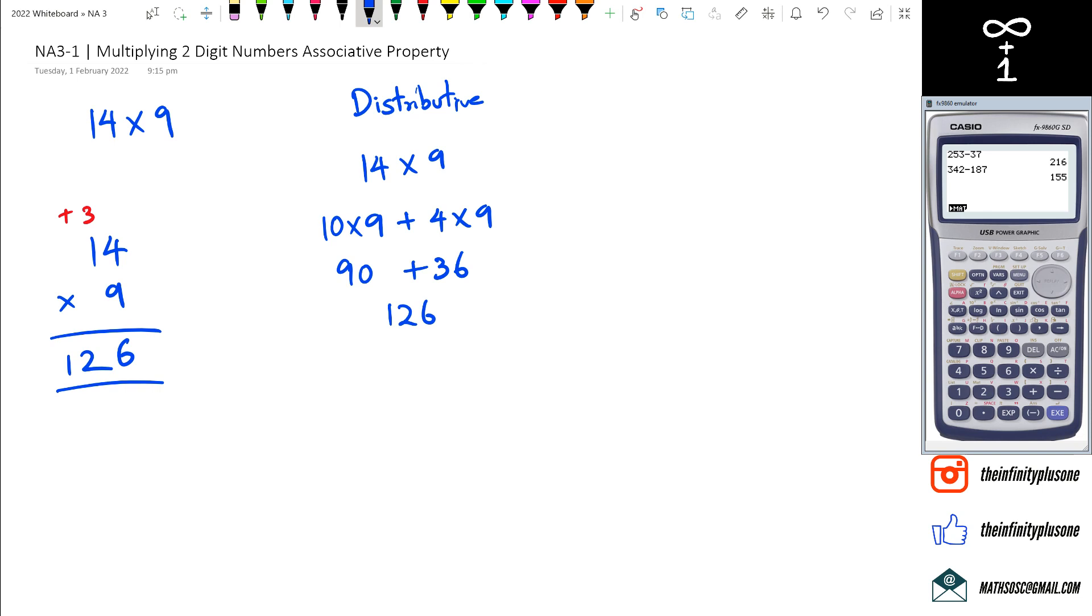Now with associative, what you could potentially do is you can split this up further. So you could actually do it like this: 14 could be written as 2 times 7 times 9.